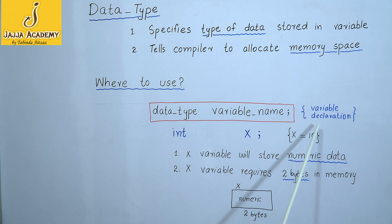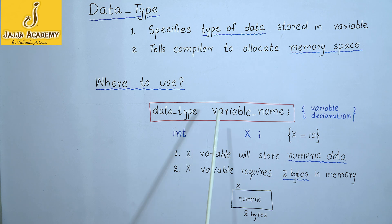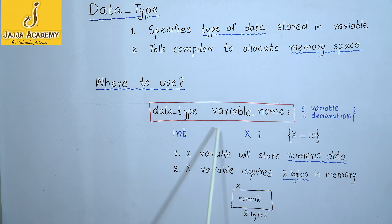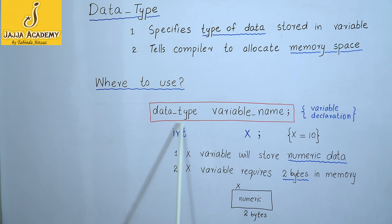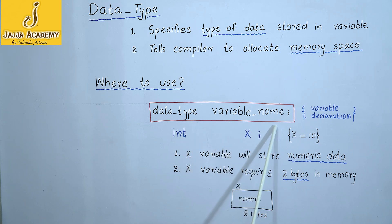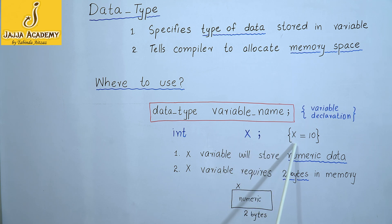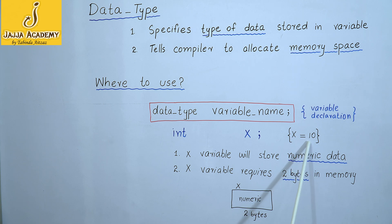For instance, in the case of variable declaration, it is mandatory to provide the data type of the variable. This is the syntax of variable declaration, where we provide the data type of the variable we are going to declare. For example, I want to declare a variable x and store the numeric value 10 in it.